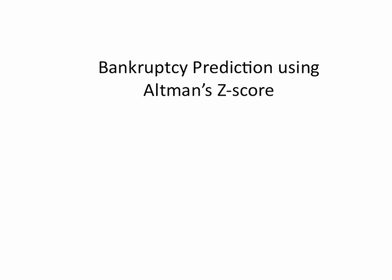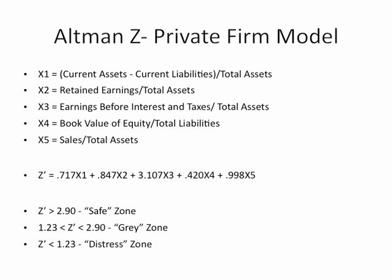The model we're going to talk about in this session has been adopted and used by Altman for private firms, typically more of the aim of this series toward the lean finance privately held entrepreneurial firms. As you can see, the private firm model is comprised of five different ratios.